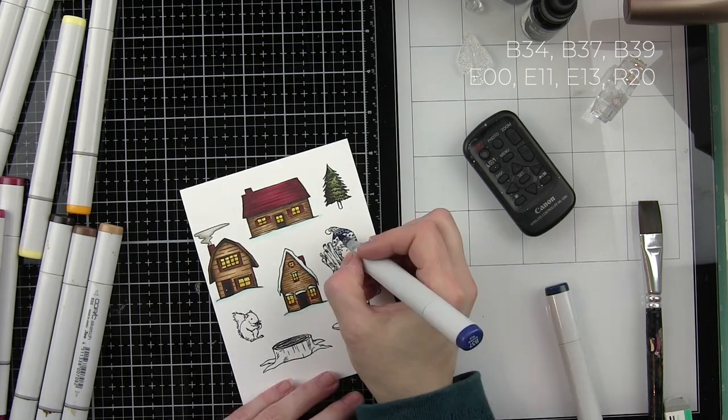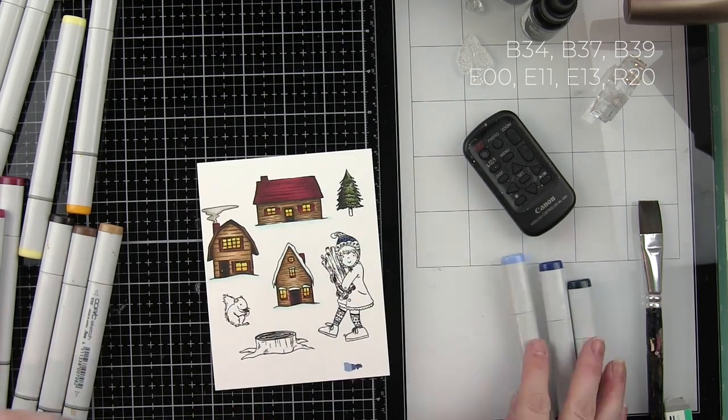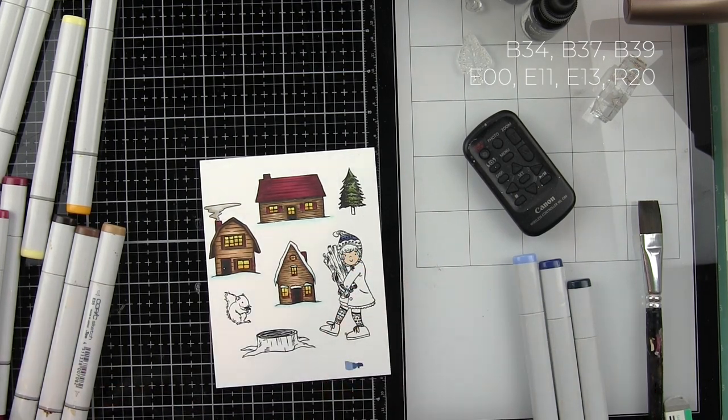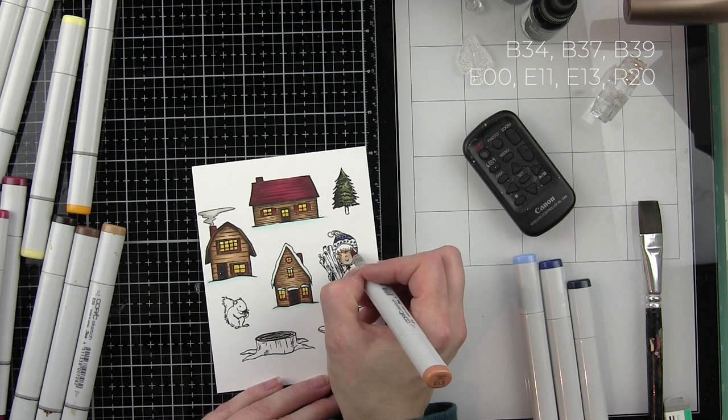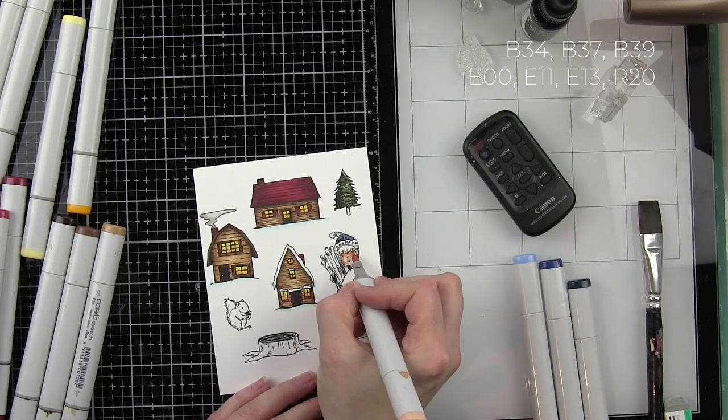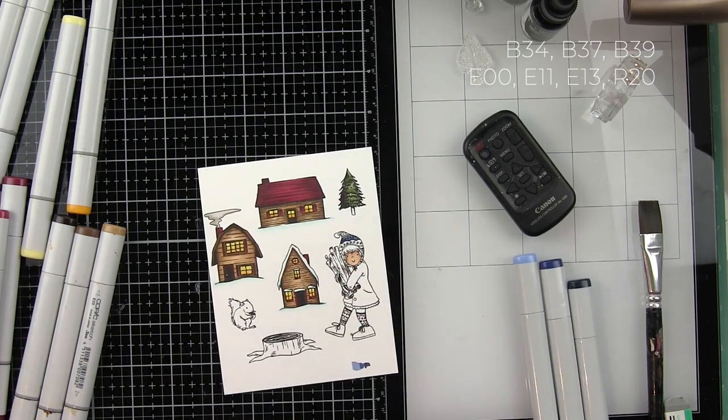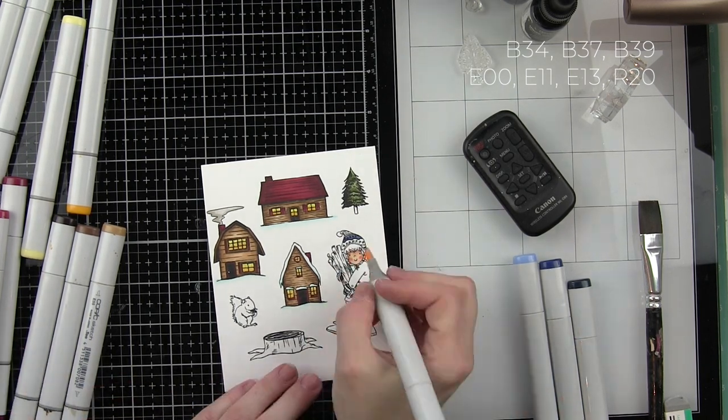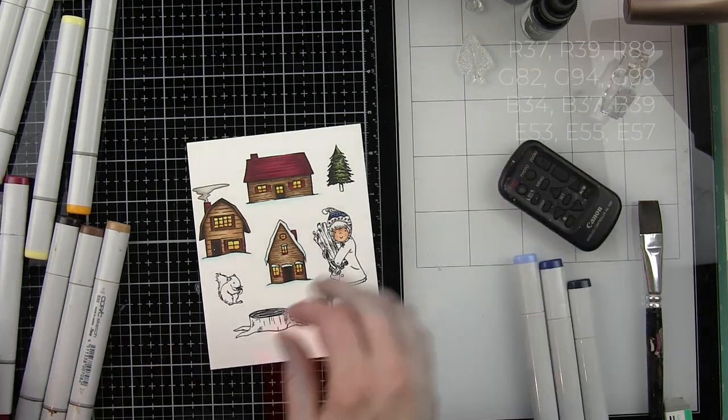Once the buildings are colored in, I'm going to start on the girl and her outfit. I've also done a little blue along the bottom edge of the buildings with BG0000 and BG01 to add that hint of snow. The snow on the roof of the one house as well.